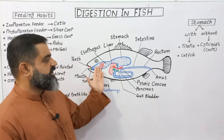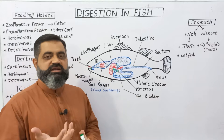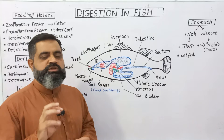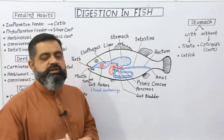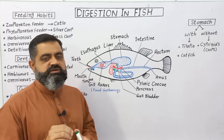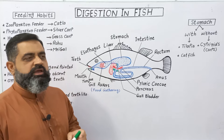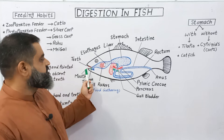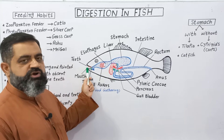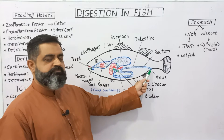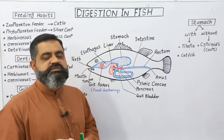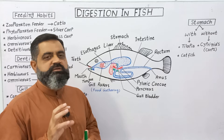The digestive system is also known as the gut or alimentary canal. It can be divided into three parts: foregut, midgut, and hindgut. The length of the gut varies according to the type of fish. The alimentary canal is composed of a tube-like structure which starts from the mouth and ends at the anus, similar to humans and other animals but with some differences.